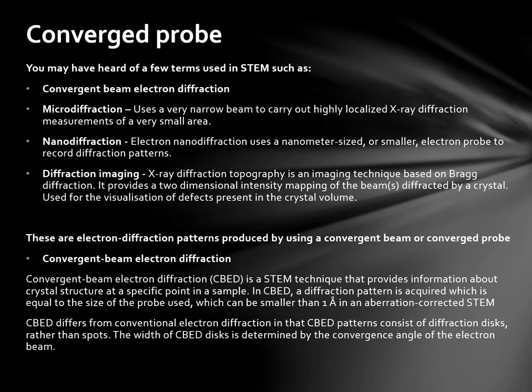Then we have the convergent beam electron diffraction. CBED is a STEM technique that provides information about crystal structures at a specific point in a sample. In CBED, a diffraction pattern is acquired which is equal to the size of the probe used. CBED differs from conventional electron diffraction in that CBED patterns consist of diffraction disks rather than spots. The width of a CBED disk is determined by the convergence angle of the electron beam.